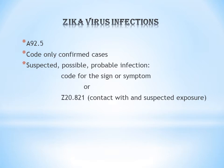You can code A92.5 only if the condition is confirmed — that is, the patient is Zika Virus infected or the Zika Virus Infection is confirmed. If it is suspected, possible, or probable, you can code only the signs or symptoms with which the patient comes to hospital. Also, if the patient has had exposure or contact with a Zika Virus infected patient and is a suspected exposure, you can give Z20.821.